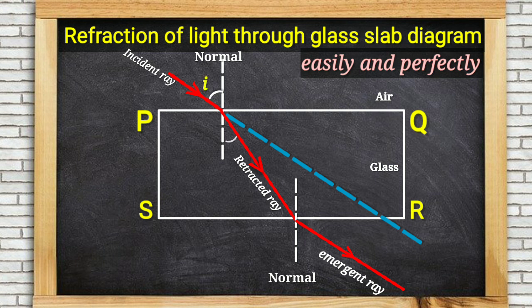Angle between normal and emergent ray, angle e. We will now mark shift or gap between emergent ray and direction of incident ray. We will label it as lateral displacement. So our diagram for refraction of light through glass slab is done.